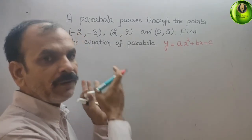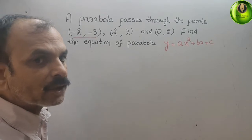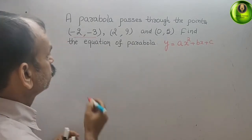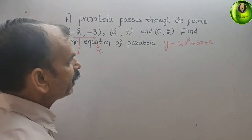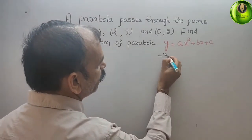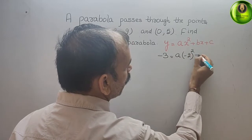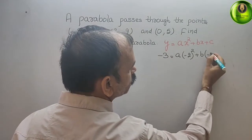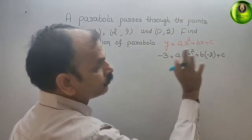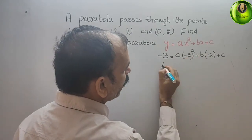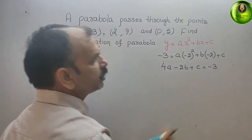Now, the coordinates given — we will substitute them into the standard form. The first coordinate is (-2, -3). That means -2 is your x and -3 is your y. Substituting: -3 = a(-2)² + b(-2) + c. That gives us 4a - 2b + c = -3. This is your first equation.